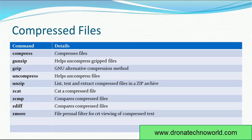GUNZIP helps to uncompress a gzip file. GZIP is a GNU alternative compression method that provides very strong compression. UNCOMPRESS will uncompress a file prepared by the COMPRESS method. UNZIP lists, tests, and extracts compressed files in a ZIP archive. ZCAT lets you view the contents of a compressed file without fully uncompressing it — very useful if you want to know what content a zip file has without extracting it.